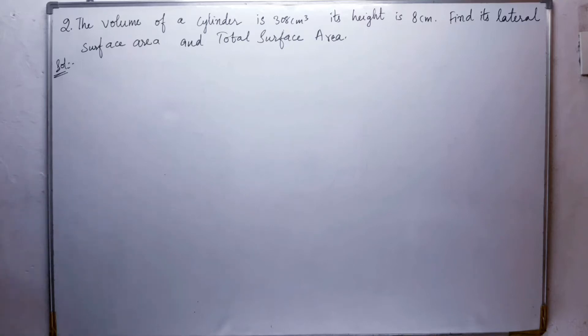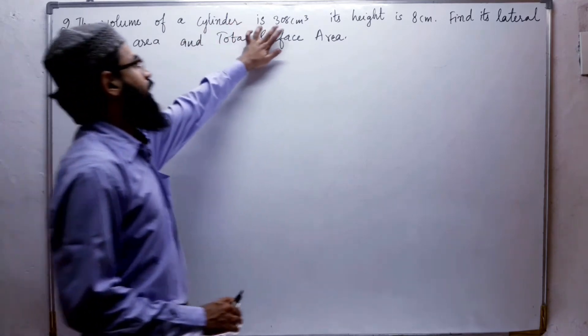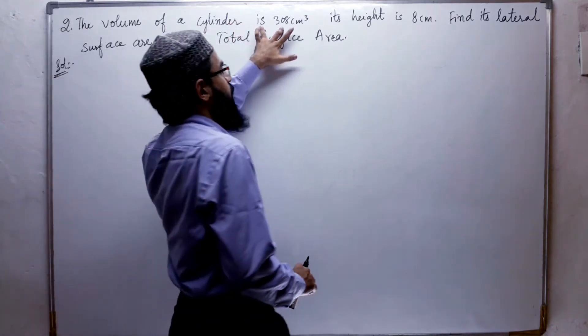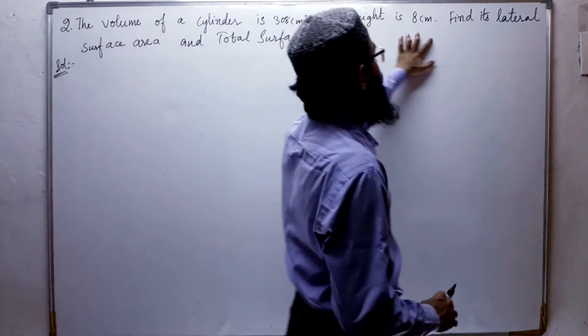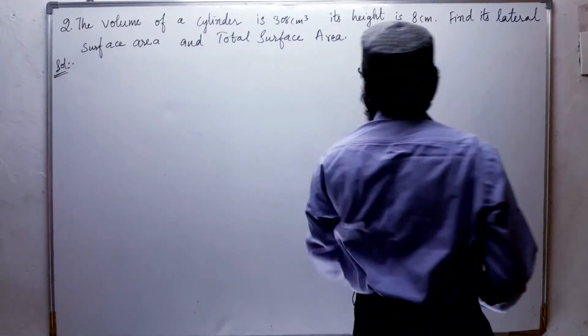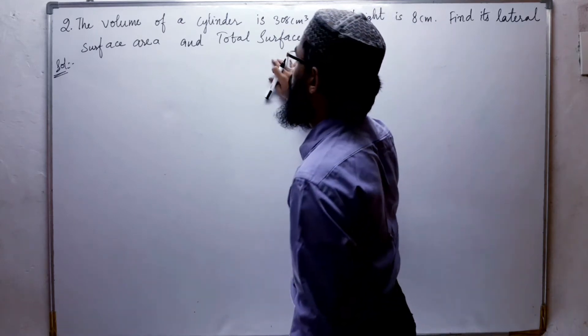Exercise number 10.2, problem 2. The volume of a cylinder is 308 cubic centimeters. Its height is 8 centimeters. Find its lateral surface area and total surface area.